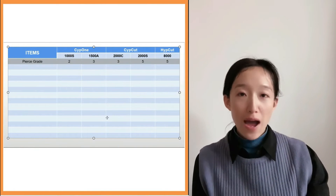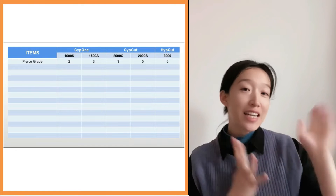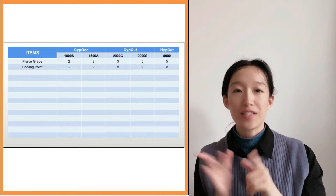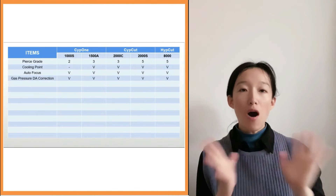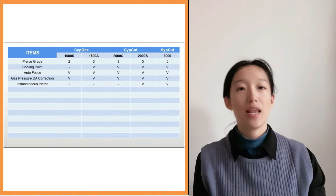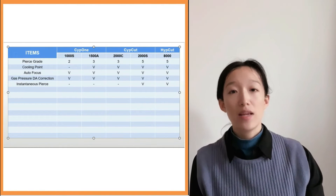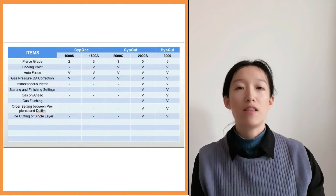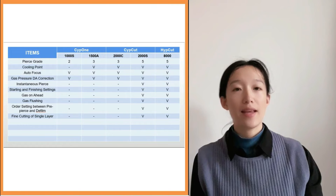Next are the differences in layer parameters. The pierce grade is 2–25 across all models from 1000 to 8000. If you want to know more about pierce settings in SafeCat, please click the video up here. The 1000 is not allowed to have the cooling point, and autofocus and gas pressure DA correction are basic functions for all versions. Instantaneous pierce is only available in 2000 and 8000. The starting and finishing settings, gas-on head, gas flushing, ordered setting between pre-pierce and de-film, and fine cutting of a single layer are also only available in 2000 and 8000.